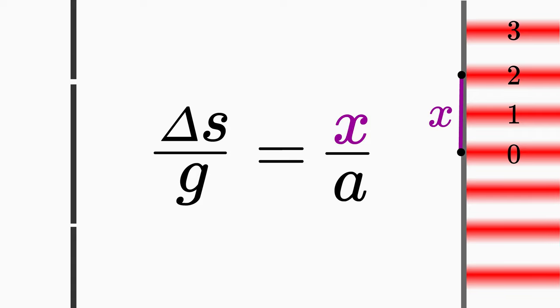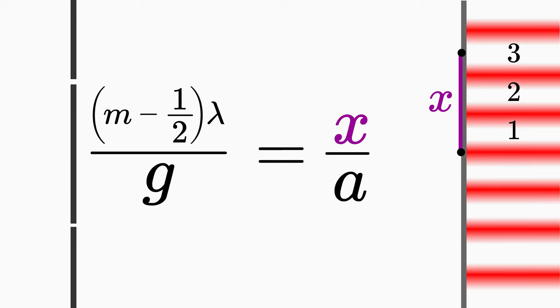If you measure the distance from the center of the screen to a bright fringe, then you insert in delta s the condition for constructive interference. And if you measure the distance from the center of the screen to a dark fringe, then you insert the condition for destructive interference in delta s.